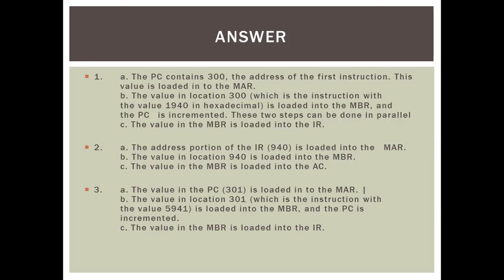Steps 2a and 2b can be done in parallel. First, the value in the MBR is loaded into the IR. Second, the address portion of the IR, which is 940, is loaded into the MAR. Then the value in location 940 is loaded into the MBR. The value in the MBR is then loaded into the AC. For step 3, the value in the PC, which is 301, is loaded into the MAR.